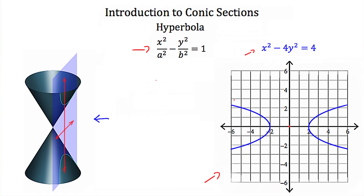Again, a and b are constant values that describe the shape of the hyperbola. The equation given as an example is not written in standard form, but we can still tell this is a hyperbola because x and y are both squared. But this time, unlike the ellipse or the circle, the coefficients for the x squared and y squared terms are opposite in sign. Notice that this standard form equation is just like the ellipse equation except we're subtracting instead of adding — it's that subtraction that clues us in that this is a hyperbola.